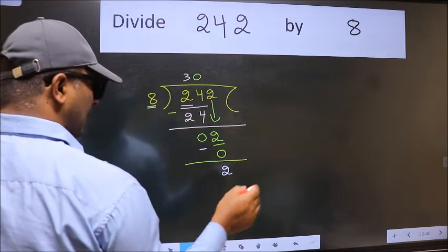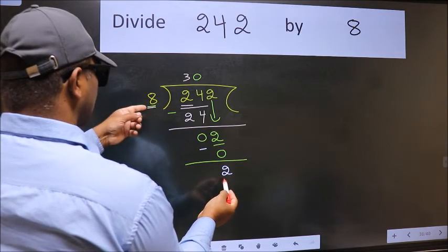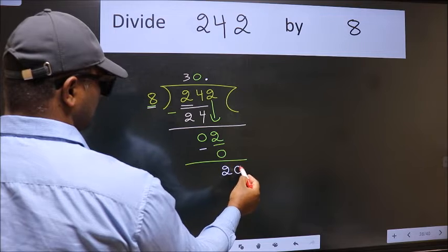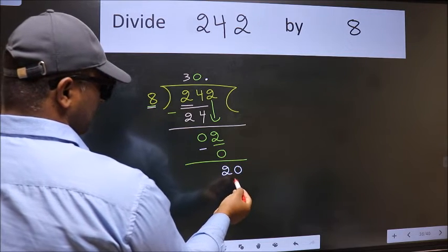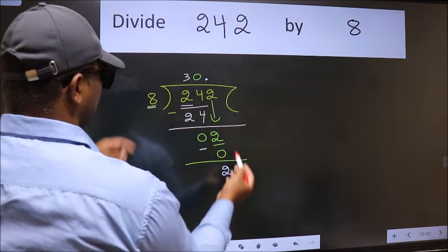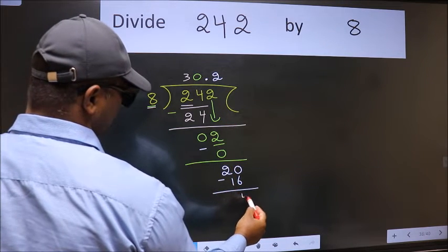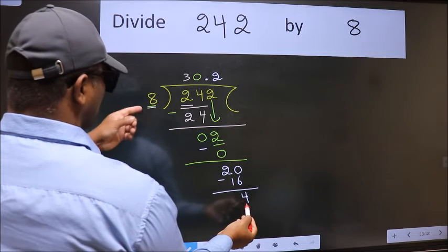We did not bring any number down, and 2 is smaller than 8. So now we can put dot and take 0, so 20. A number close to 20 in the 8 table is 8 times 2 is 16. Now we subtract, we get 4.